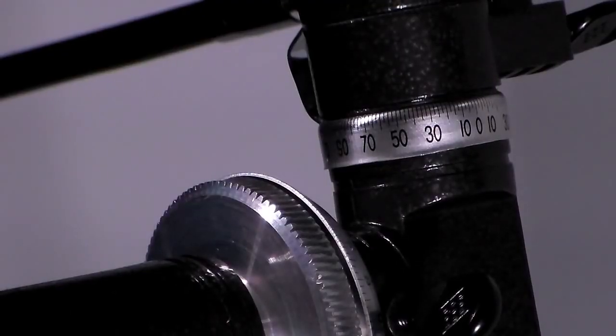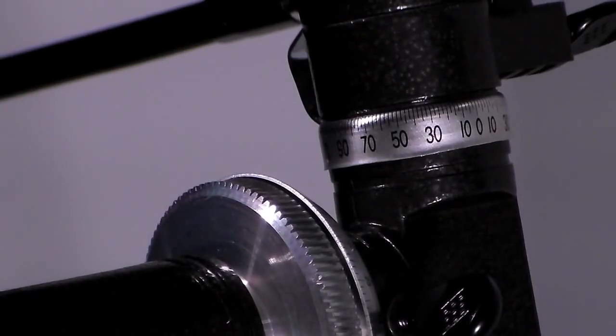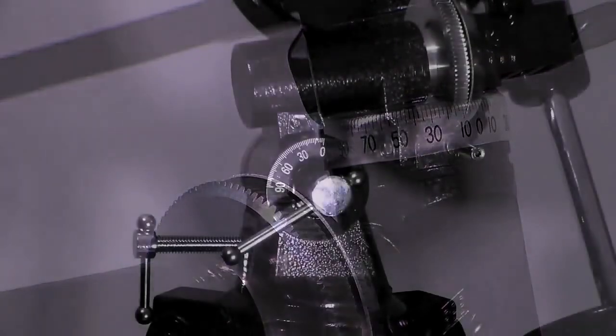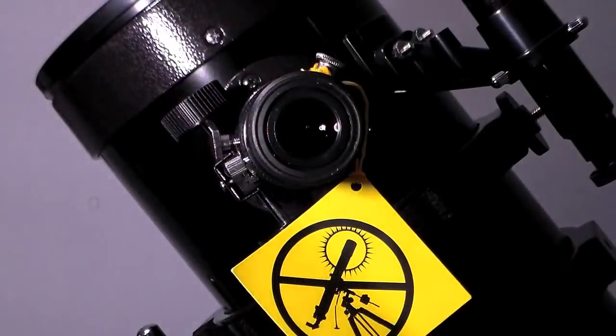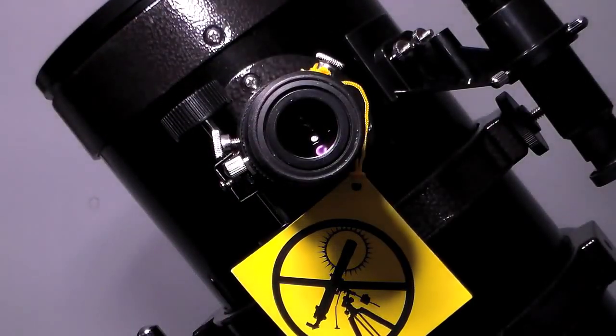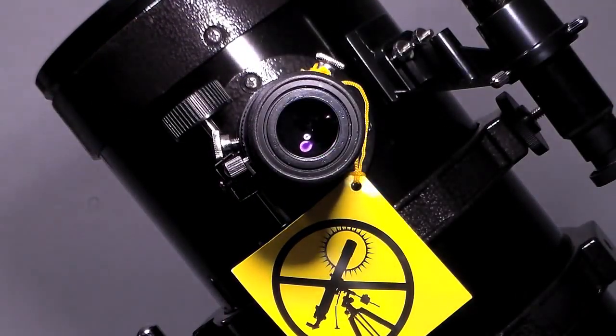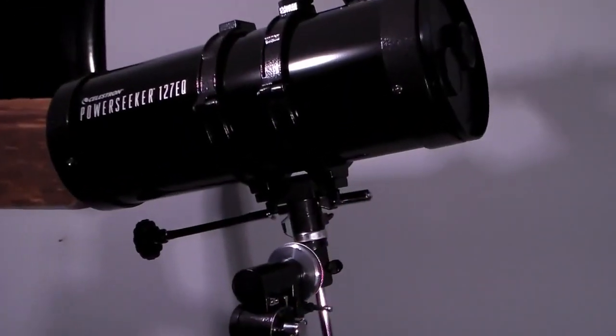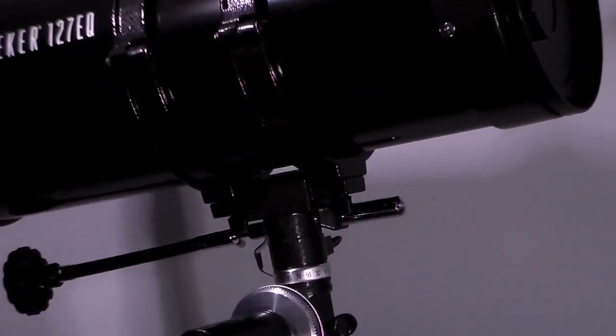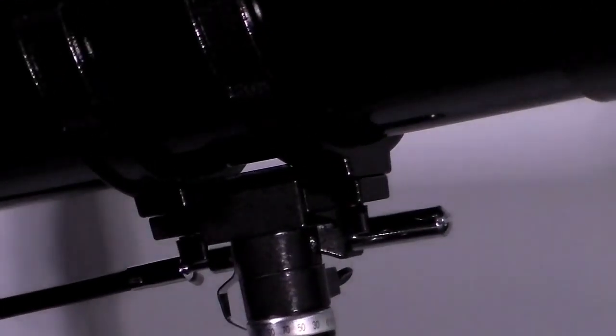This telescope has declination settings and right ascension settings. In astronomy, declination is one of the two angles that locate a point on the celestial sphere in the equatorial coordinate system. The right ascension is the east-west coordinate by which the position of a celestial body is ordinarily measured. More precisely, it is the angular distance of a body's hour circle east of the vernal equinox, measured along the celestial equator.